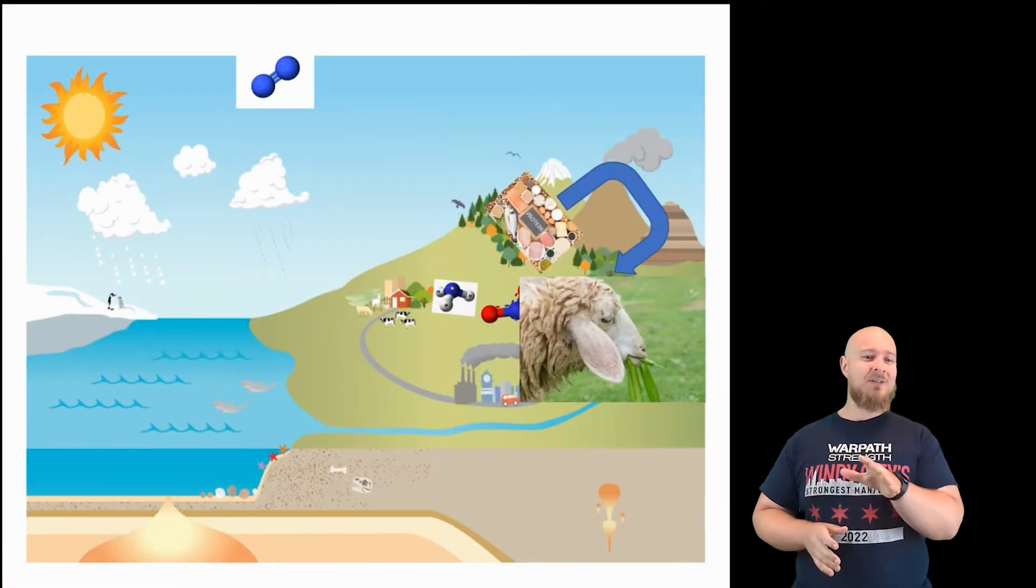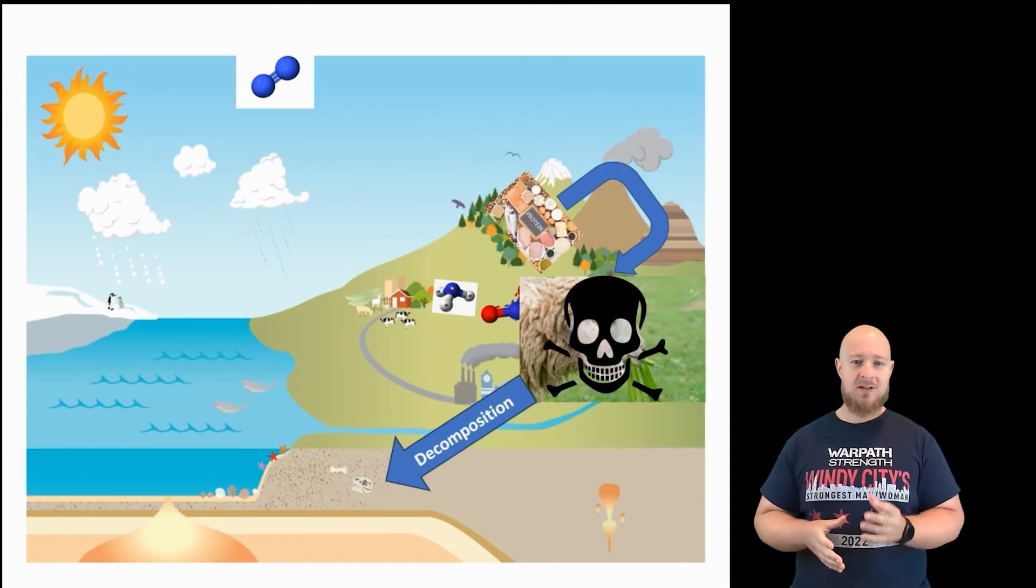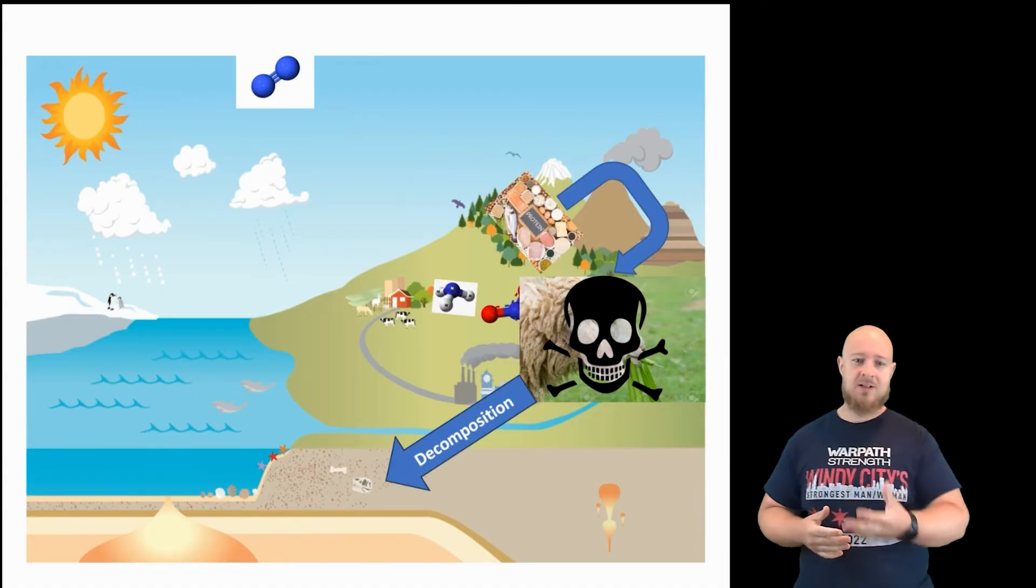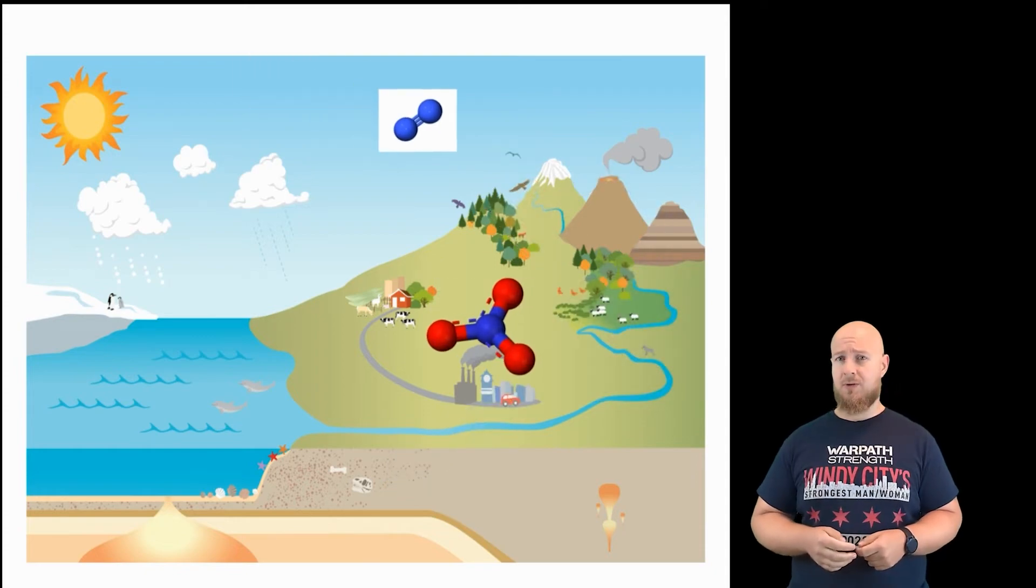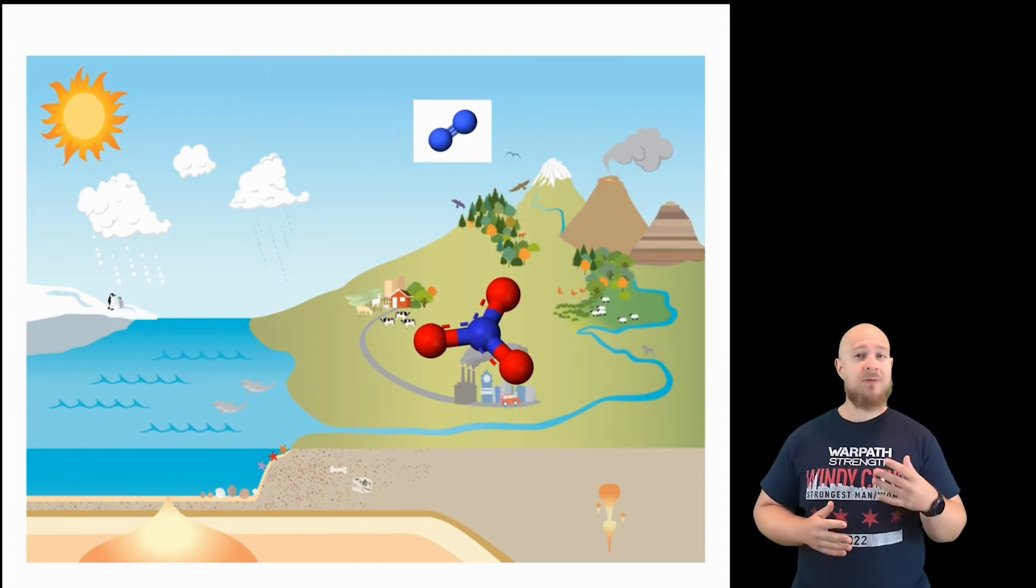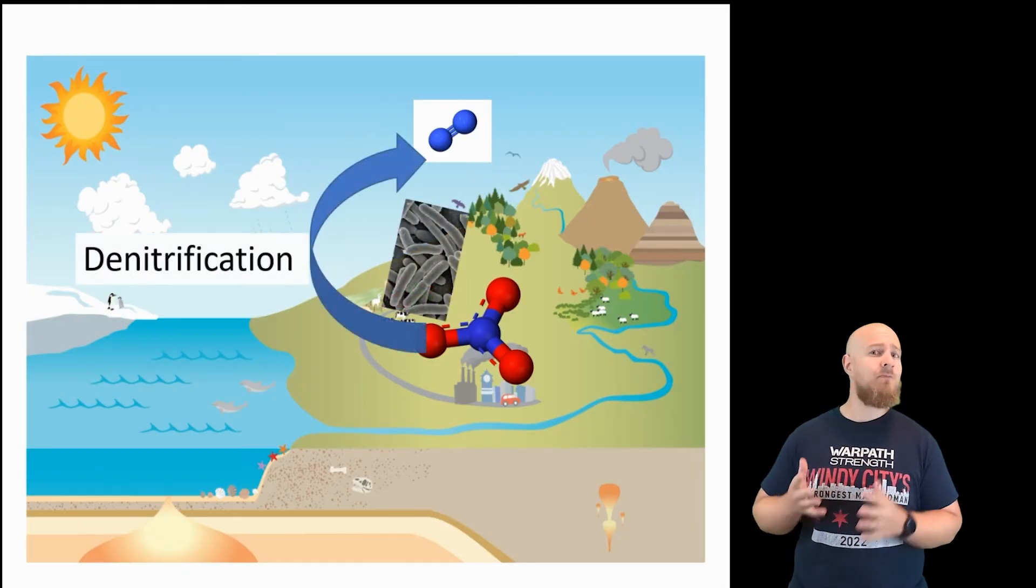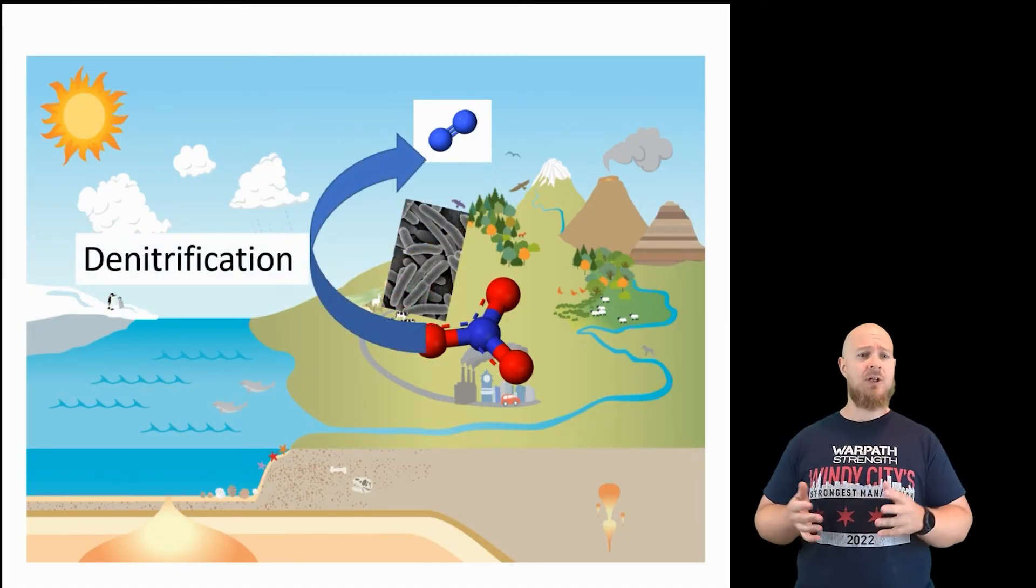If an organism dies, those proteins and body tissues are broken down to some nitrogen-containing molecule by decomposers and returned back to the soil. At the end of this entire cycle, nitrates and ammonia can be denitrified and returned back into the atmosphere as nitrogen gas.